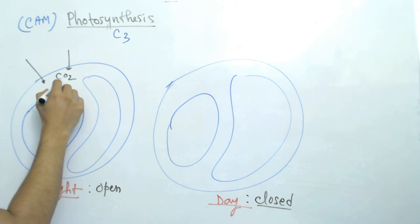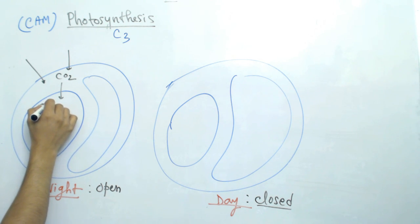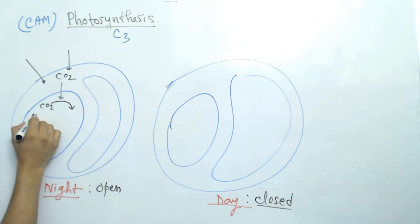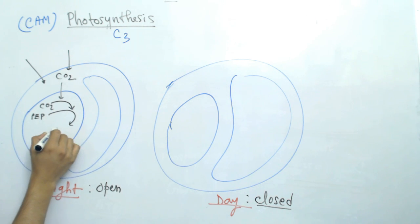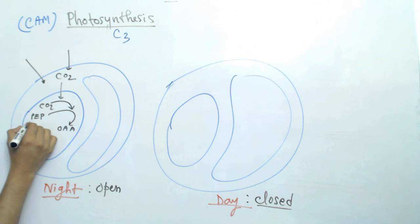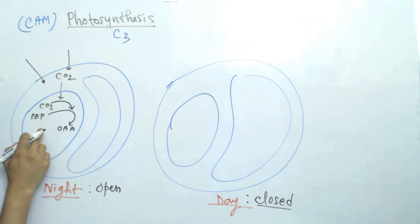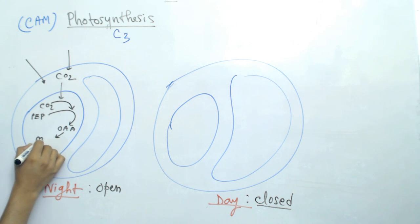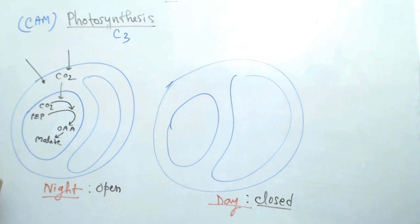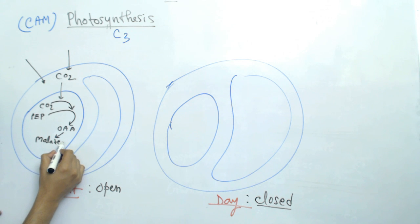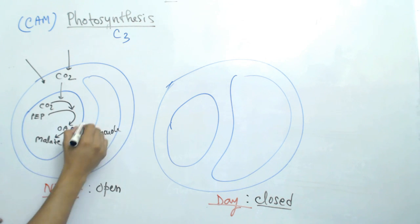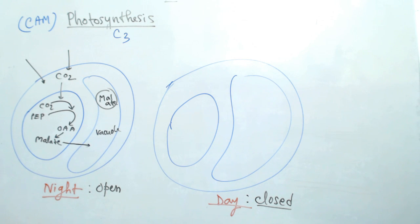In the nighttime when stomata is open, carbon dioxide can enter. Once the carbon dioxide is inside, they fix it by adding it to phosphoenolpyruvate (PEP), converting PEP into oxaloacetate. Phosphoenolpyruvate is a three-carbon molecule; when carbon dioxide is fixed to it, they make oxaloacetate, which is a four-carbon molecule. This oxaloacetate is then converted to malate, which is easily transported across the chloroplast membrane into the vacuole.